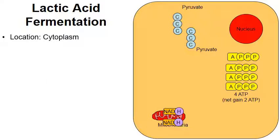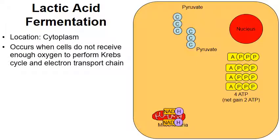Lactic acid fermentation occurs in the cytoplasm of cells, and it occurs when cells do not receive enough oxygen to perform the Krebs cycle and the electron transport chain, which is what cells would prefer to do. The Krebs cycle and the electron transport chain make a large amount of ATP, but the mitochondria specifically needs oxygen to do this. There are times when cells don't have enough oxygen, so they have to perform lactic acid fermentation.